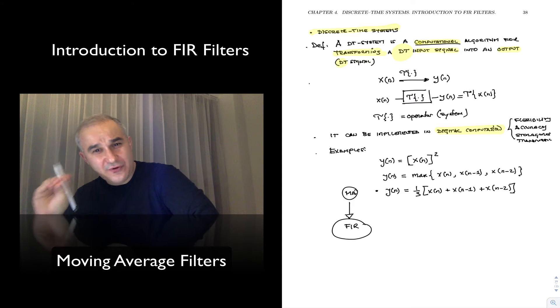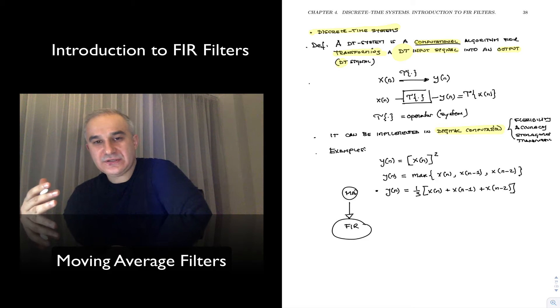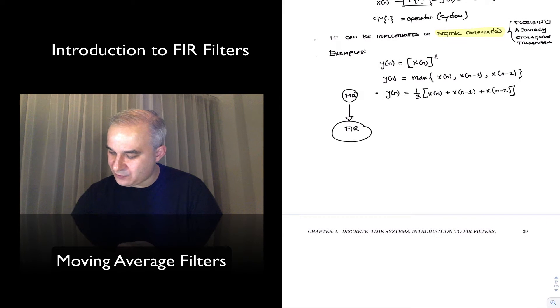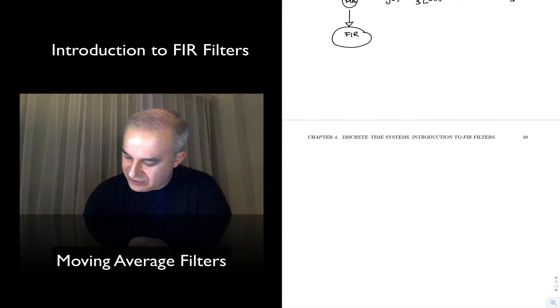We mentioned that it is very important that these are not just mathematical filters that are not implementable, but they can be implemented through digital computation. And now we are going to see examples, starting with the simplest type of example, which is the Moving Average filter.